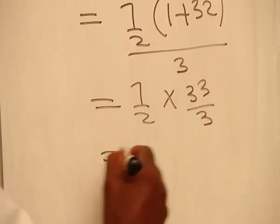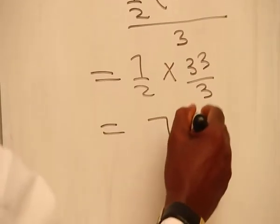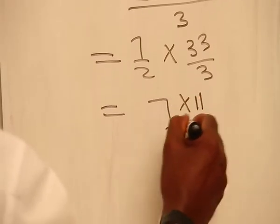all over 3, which will give you 7 times 11, all over 2.